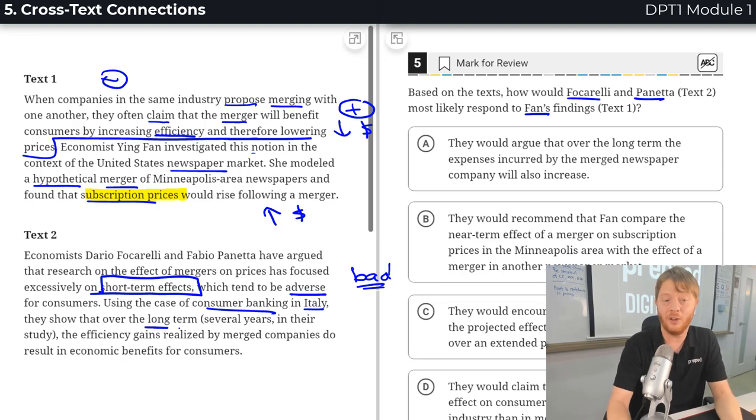So using the case of consumer banking in Italy, they show that in the long term, actually, efficiency gains by these merged companies do result in economic benefits. So I guess passage two is saying there are economic financial benefits.